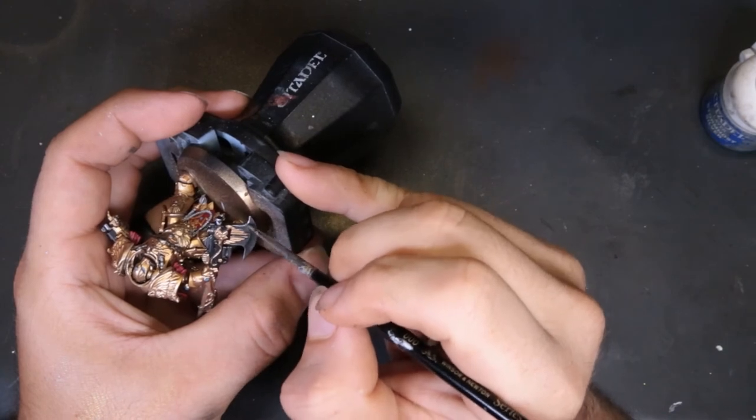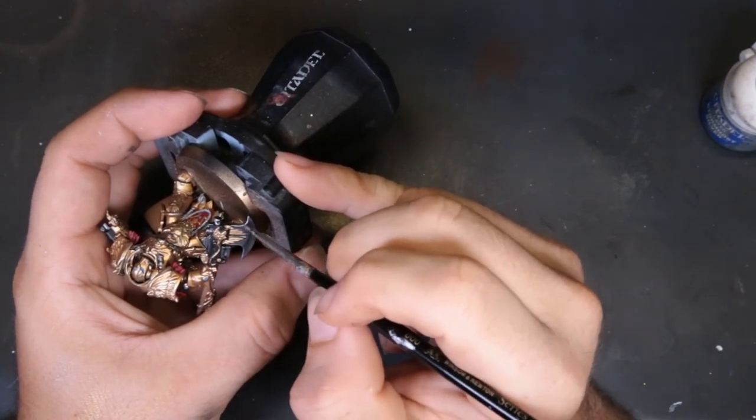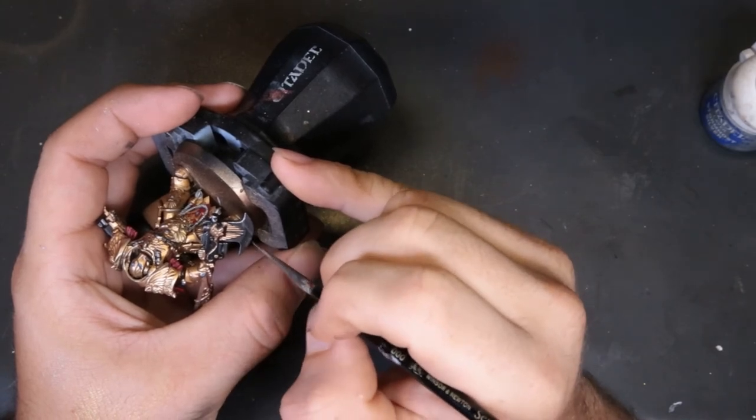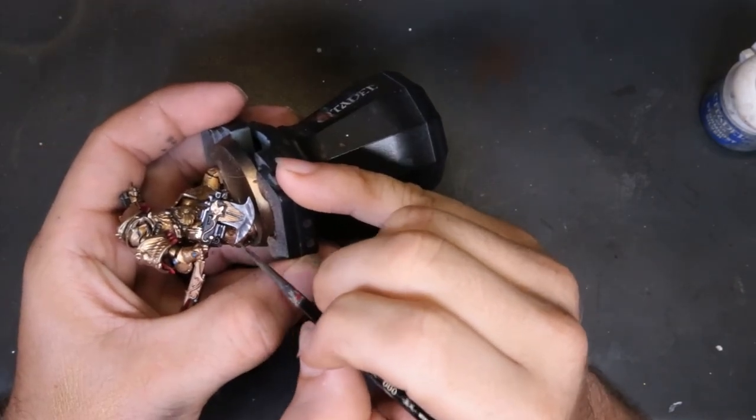Then we move to this different style of doing a power axe that I wanted to try out this week. We throw in short, choppy, slicing lines into here. We're going to have that as one of our base tones. Come through with some Thousand Sons Blue and work in the same slashing highlights.